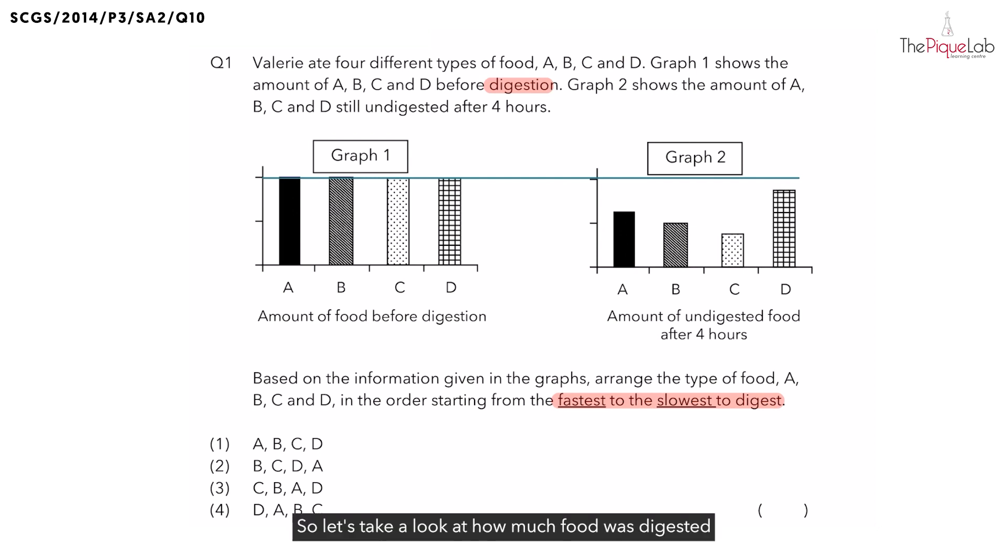Let's take a look at how much food was digested for A, B, C, and D. When we take a look at A, how much food was digested? It is actually the decrease in the amount of food. The amount of food digested is represented by this purple shaded area. Now, let's do the same for the other types of food. For B, the amount of food digested will be represented by this blue colored shaded area.